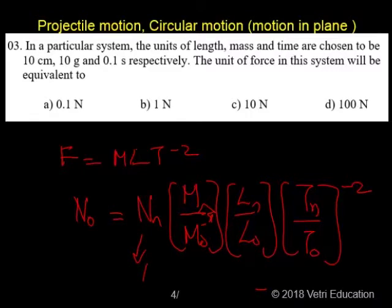If this is 1, we will drop this and calculate. So N naught equals M_s by M naught. M_s is the value in the new system. New system they have given it as 10 gram.